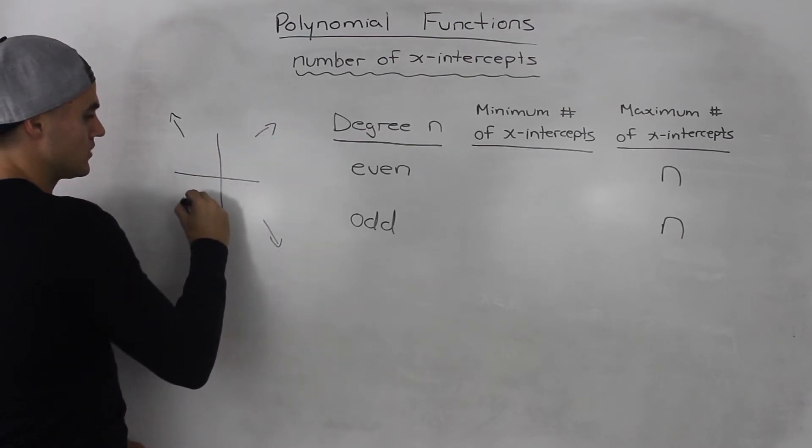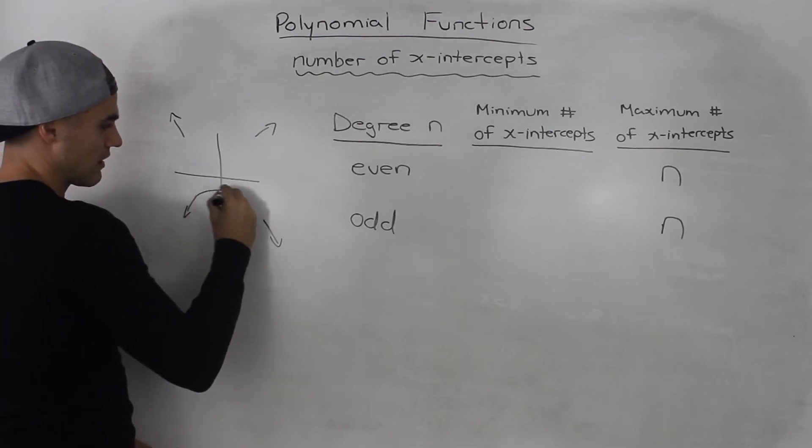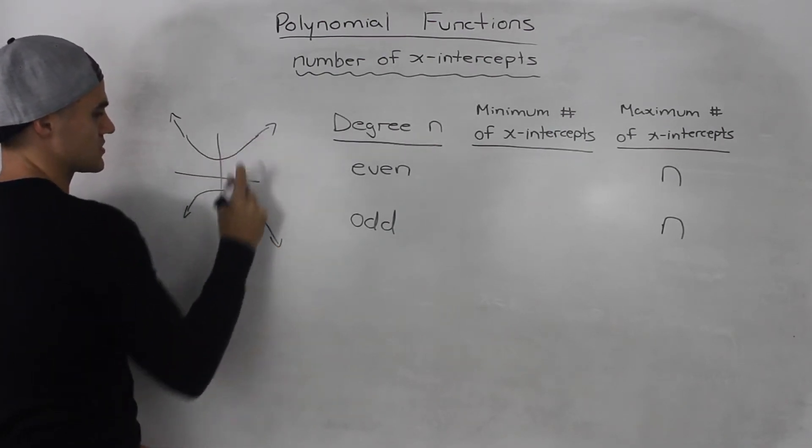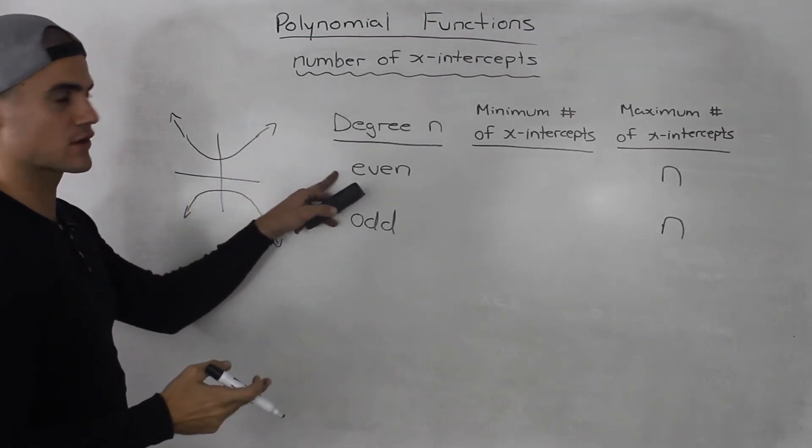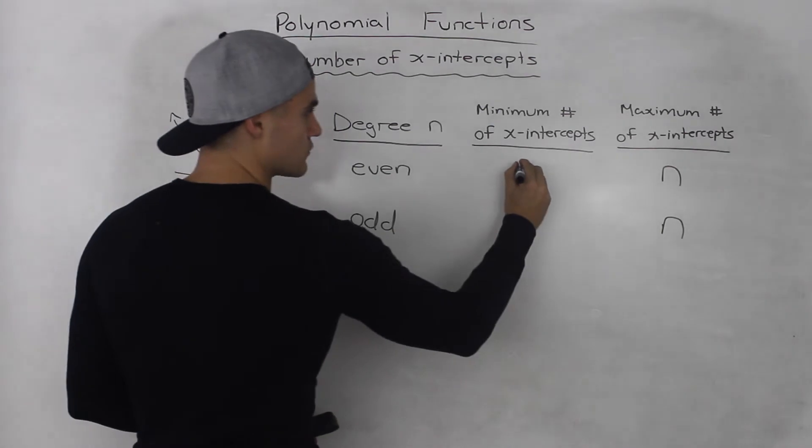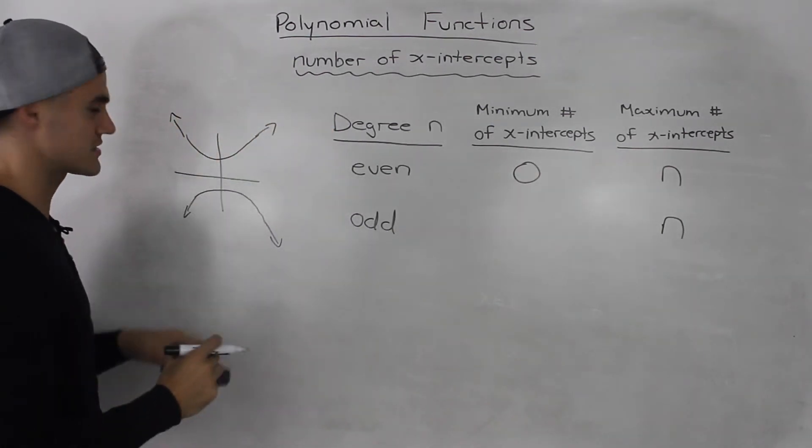So you can have, for example, a parabola, which is an even degree, that has no x-intercepts. Something like that. It's very possible for an even function to have 0 x-intercepts. It doesn't necessarily have to have an x-intercept.